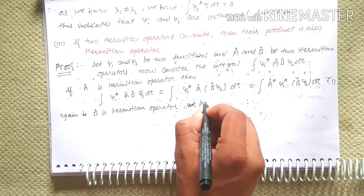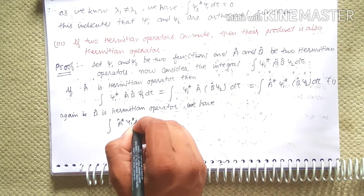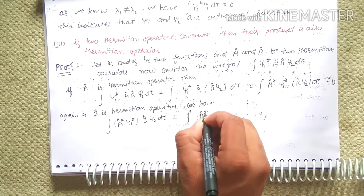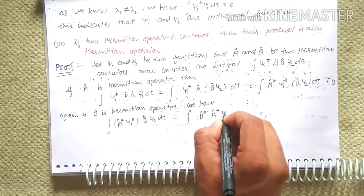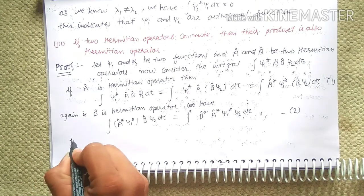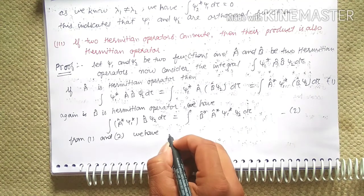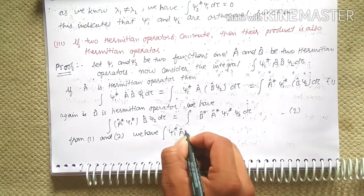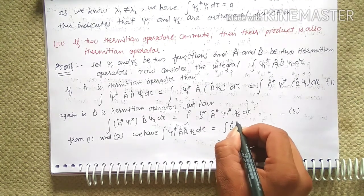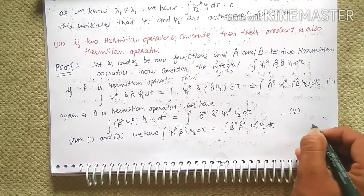Since B-hat is a Hermitian operator, we have: integration of A-hat* chi-1* B-hat chi-2 d-tau equals integration of B-hat* (A-hat* chi-1*) chi-2 d-tau, which equals integration of B-hat* A-hat* chi-1* chi-2 d-tau, equation three.